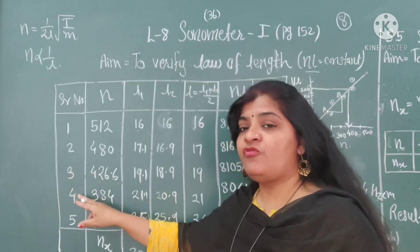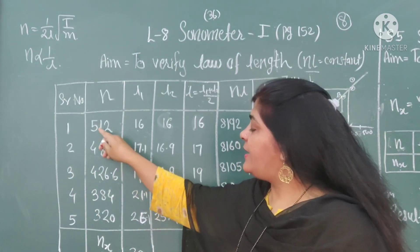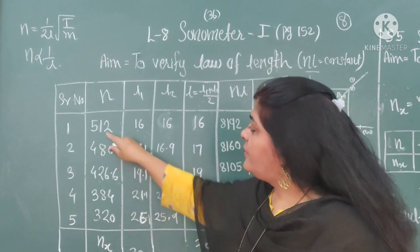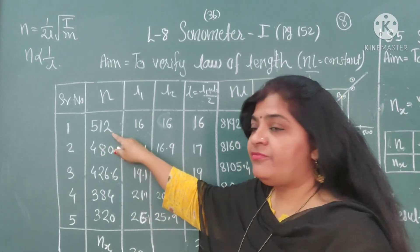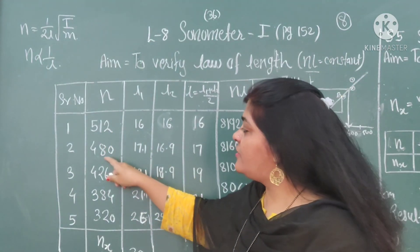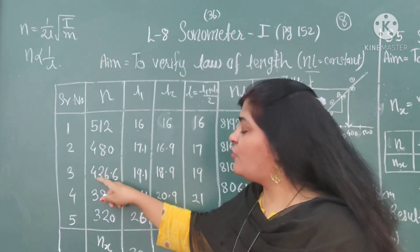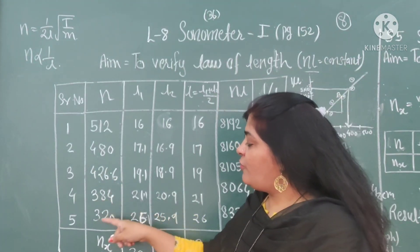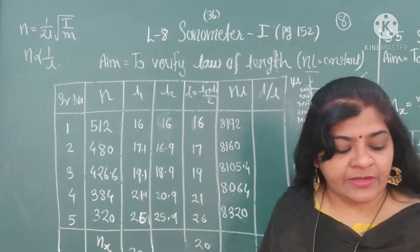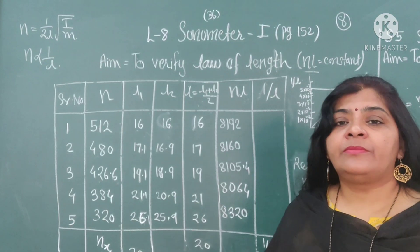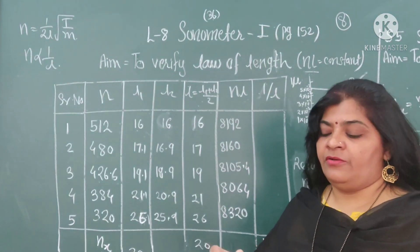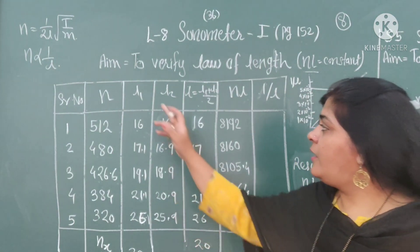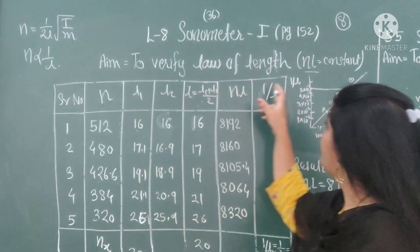The 5 observations are: 1, 2, 3, 4, 5. The first value is 512, next is 480, then 426.6, then 384 and 320 — whichever tuning forks are given in your set. Next in the observation table is the column for length.